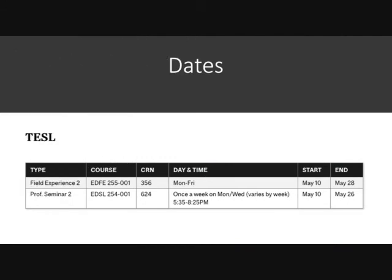Dates for FE2: this is the one for TESOL for ISA, but it's fairly similar for everybody. For field experience number two and professional seminar number two, the field experience runs Monday to Friday, starting May 10th and finishing May 28th. We meet once a week on Monday or Wednesday — my group meets on Wednesdays.